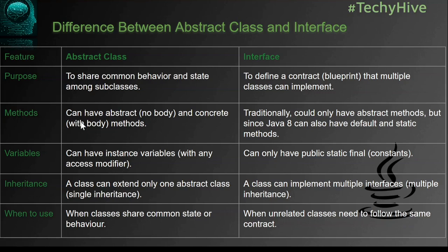The next difference is that an abstract class can have both abstract methods and concrete methods — that means method definitions with or without implementation. On the other hand, traditionally all methods of an interface are abstract with no definition. But since Java 8, default and static methods are allowed in interfaces to share common behavior. Also, an abstract class can have instance variables, meaning it can hold and share common state among its subclasses.